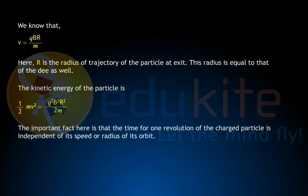The important fact here is that the time for one revolution of the charged particle is independent of its speed or its radius of orbit. This was a schematic of a cyclotron. In reality, it appears as shown here.